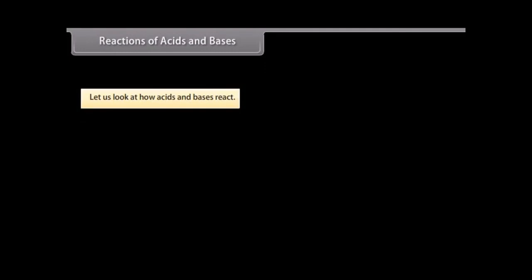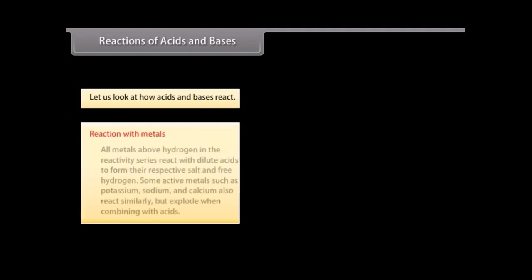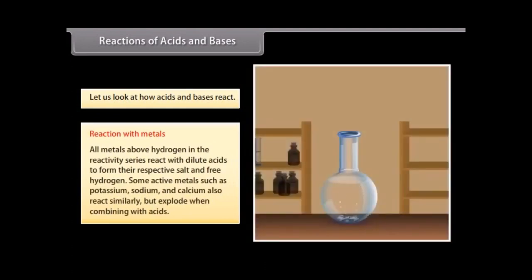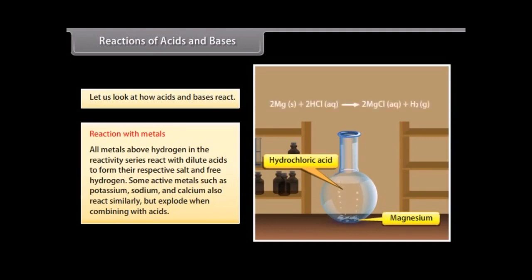So we must be careful while handling acids and bases. Let us look at the different reactions of acids and bases with metals, metal carbonates and metal hydrogen carbonates, and with each other. Reaction with metals: All metals above hydrogen in the reactivity series react with dilute acids to form their respective salt and free hydrogen. Active metals such as potassium, sodium and calcium also react similarly but explode when combining with acids.